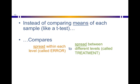And the spread between these three levels—of email, of receiving a letter, of receiving a phone call—the spread between those three is called sum of squares treatment.